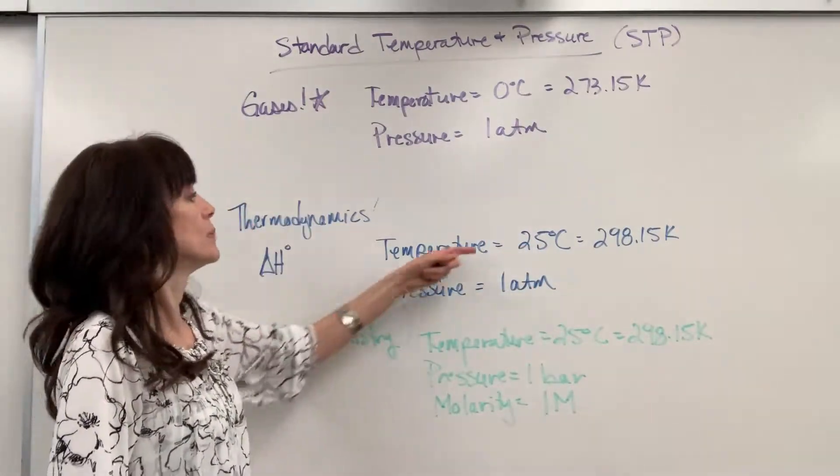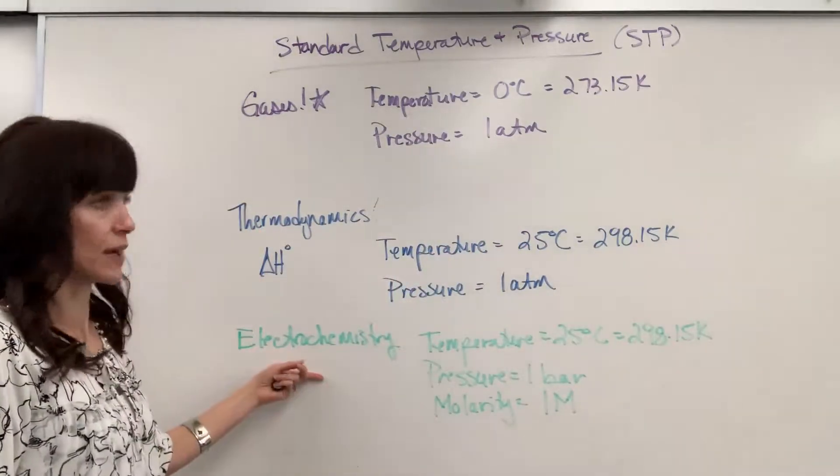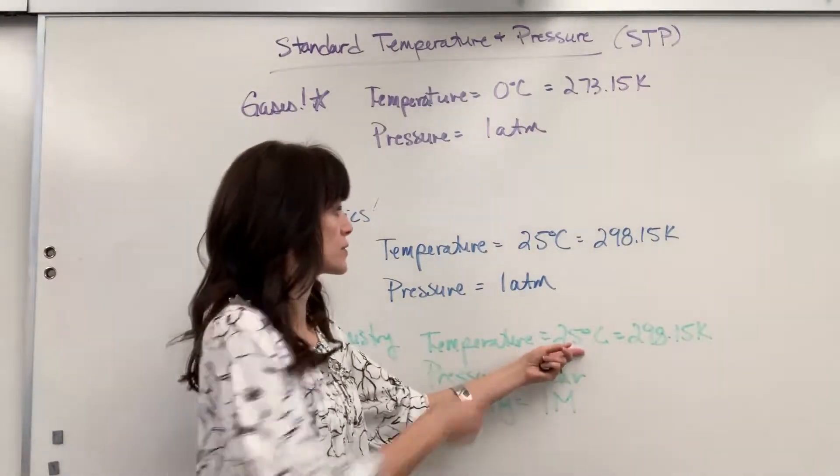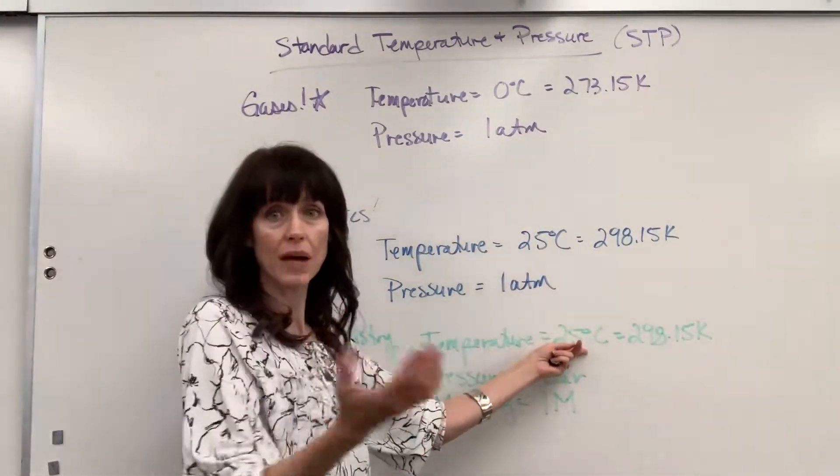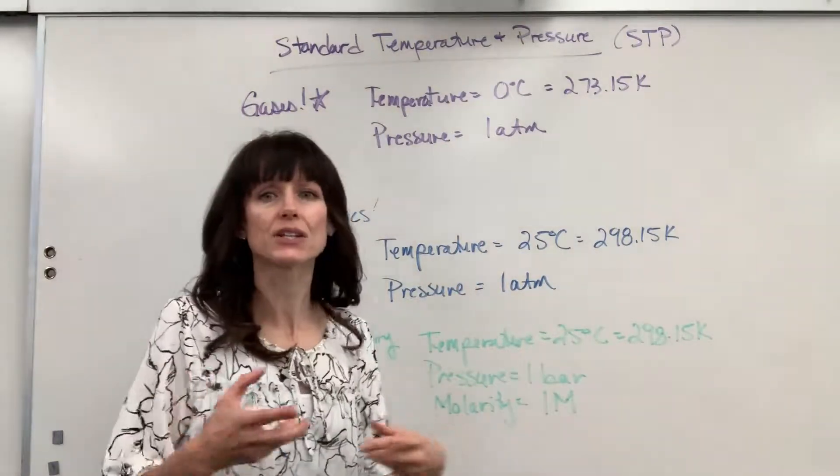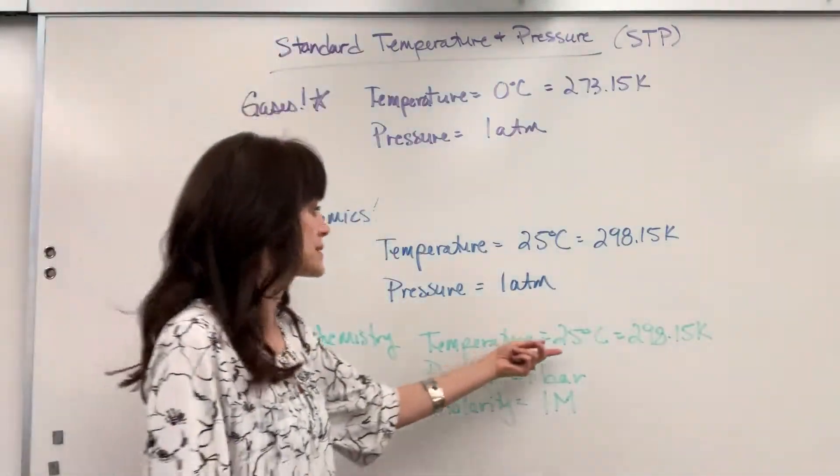So pressure is the same, but temperature is different. Now, electrochemistry. We have another change. The temperature for electrochemistry is also 25 degrees C, so that models and fits with thermodynamics. And there's connections with delta G and our E-naught, our standard reduction potential. So that makes sense.